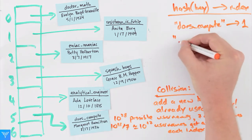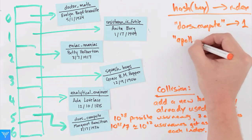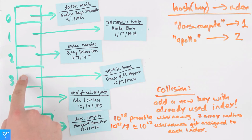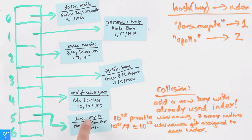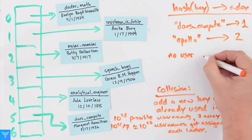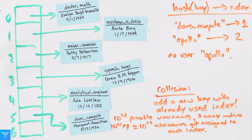What would happen if we looked for a username Apollo, who isn't in our database? The hash of Apollo is two. So the code would start looking at index two, not finding Apollo, it would move to index three, four, and then five. Once it reaches index six and finds an empty slot, it can return and tell us that Apollo isn't in our database.